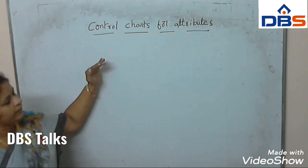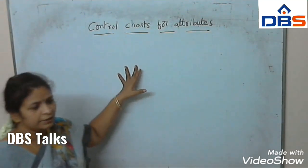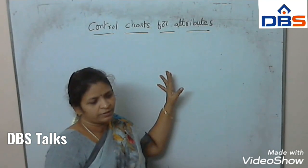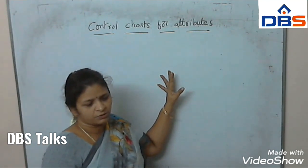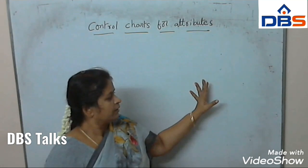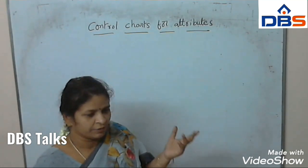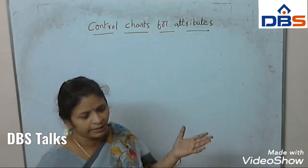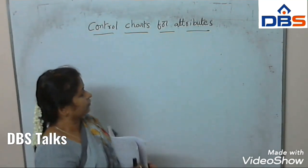First, let us know what is meant by attributes. Attributes means the characteristics of a product — the fairness of the product, the damages of the products. These are all the characteristics of the products.